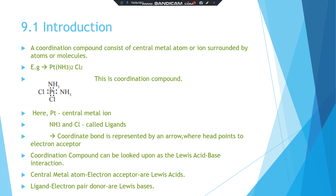A coordinate bond is conveniently represented by an arrow where the arrowhead points to the electron acceptor — the central metal atom or ion, which is usually an electron-deficient species. The central metal ion accepts the electron pair while the ligand serves as the electron donor.